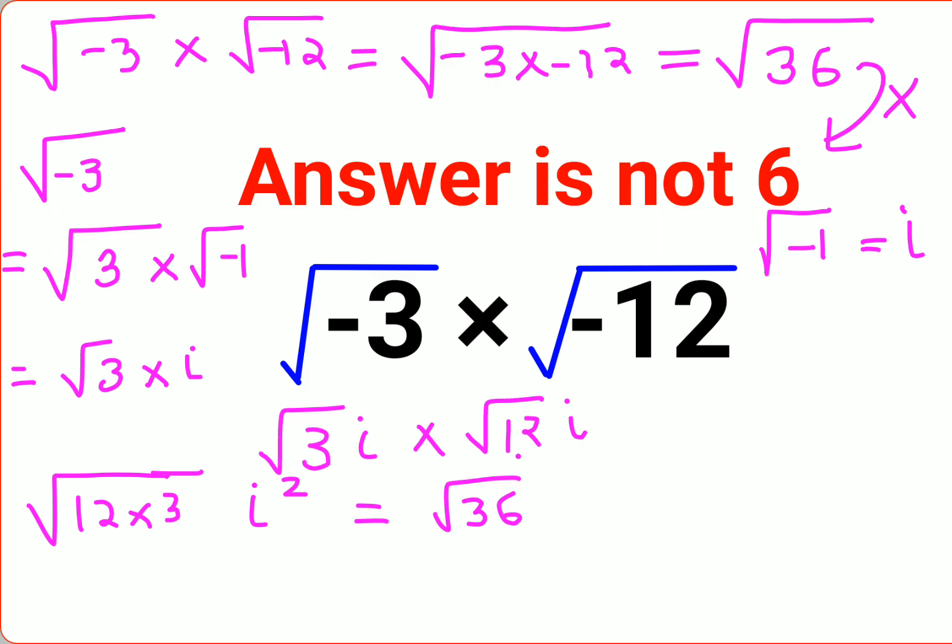If √(-1) is i, then we can say that squaring both sides, when I square both sides, I get the value of i². So this square and the root gets cancelled, and it is -1 equals i². So this becomes i². So √36 is 6 times -1. So the final answer is just -6.